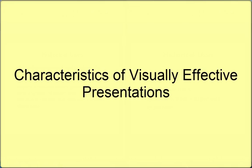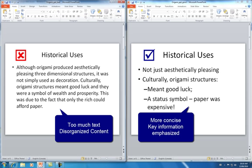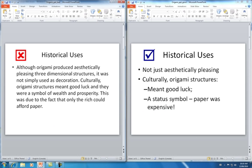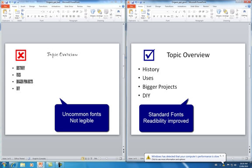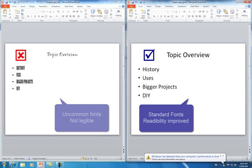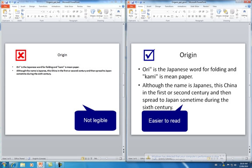Characteristics of Visually Effective Presentations: Slide text should be read in 7 seconds or less. Use standard, easy-to-read fonts like Arial and Times New Roman. Minimum font size should be 42 points for headings and 36 points for body text.